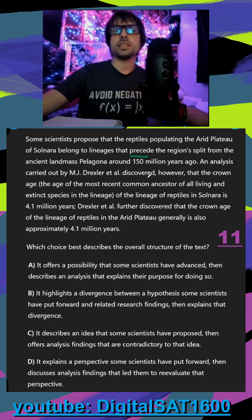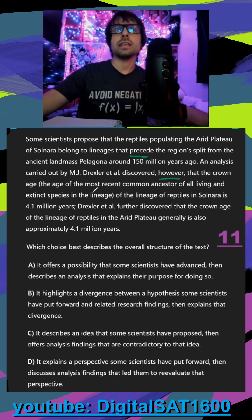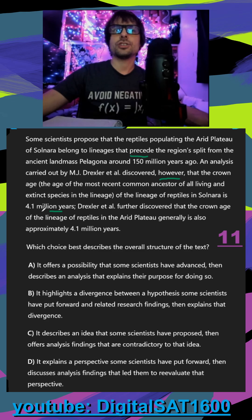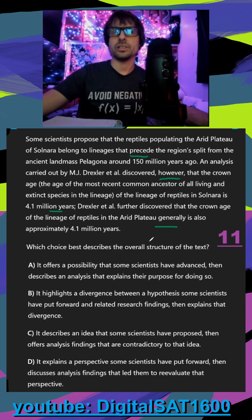An analysis carried out by these people discovered, however, that the crown age — the age of the most recent common ancestor of all living and extinct species in that lineage — of the lineage of reptiles in Solnera is 4.1 million years. They further discovered that the crown age of the lineage of reptiles in the arid plateau in general is also 4.1 million years.